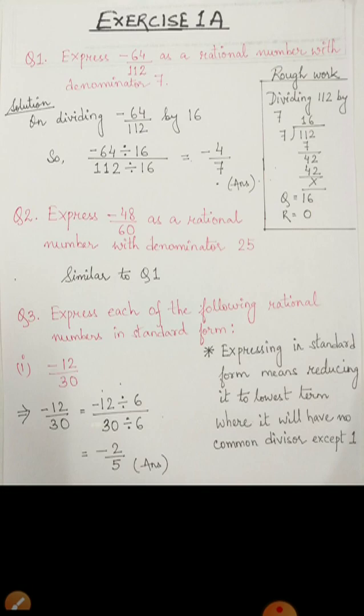Next, question number 3: express each of the following rational numbers in standard form. Now, if we want to express any number in standard form, that means we have to reduce it to its lowest term — that is, there will be no common divisor except 1.